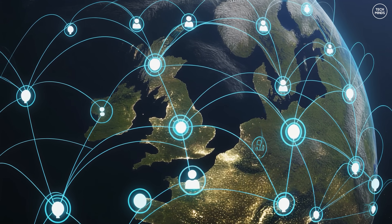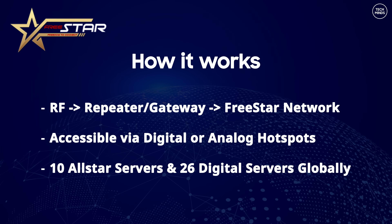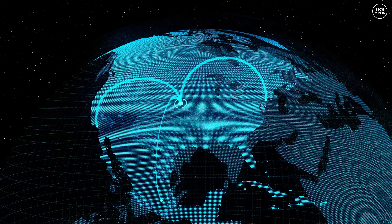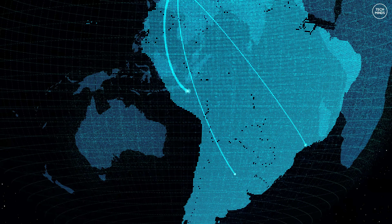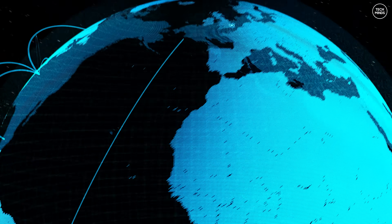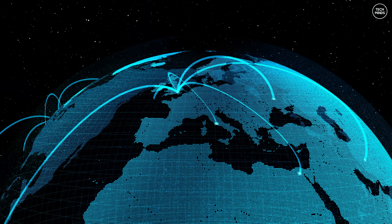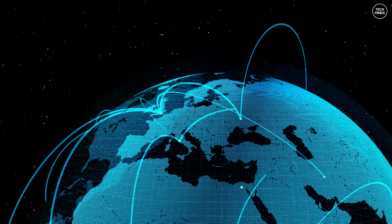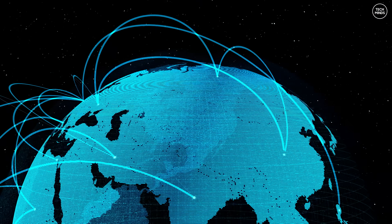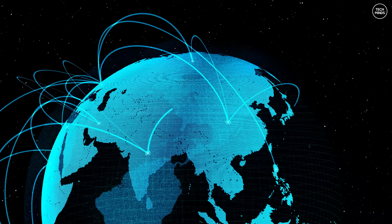When I say network, we're talking about repeaters and gateways all linked into the FreeSTAR network. This means if you transmit using your RF radio into one of these repeaters or gateways, your transmission will be rebroadcast in real time to any other repeater or gateway linked into the FreeSTAR network — and that's around the world. You can have two-way conversations with anyone at the other end, and even a net of many users all located in different parts of the world. To me, that truly brings ham radio operators together.